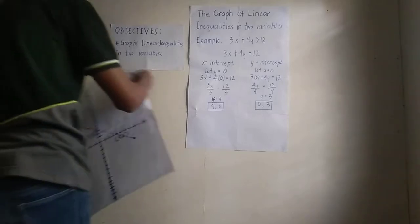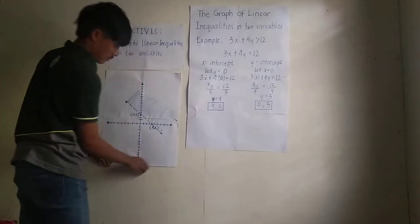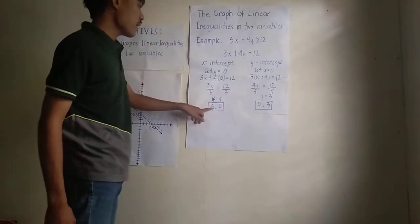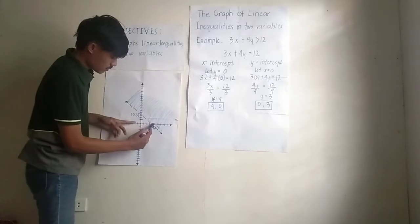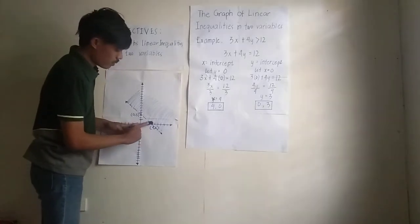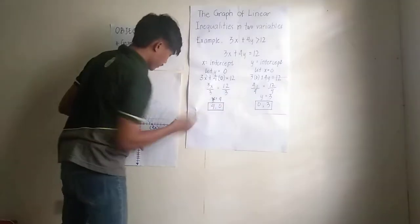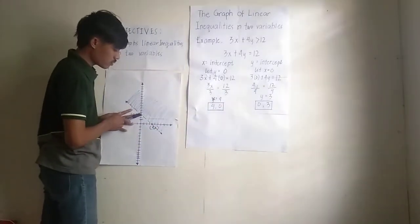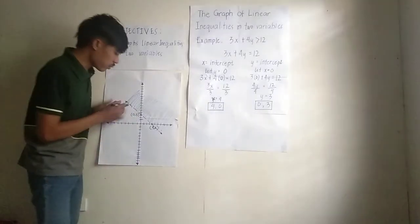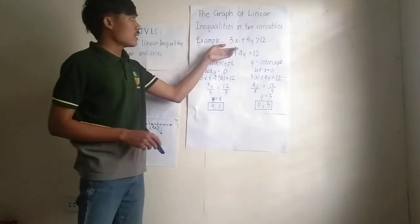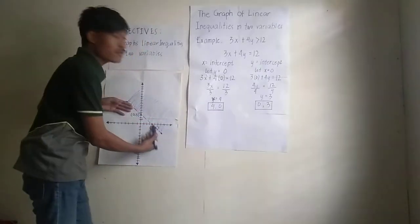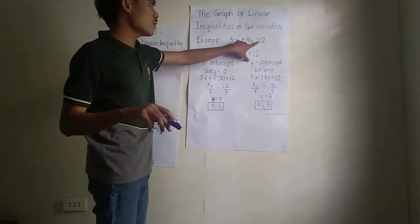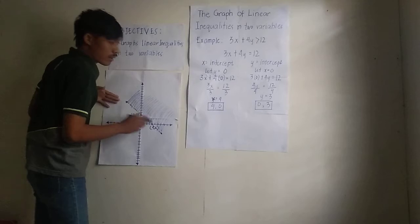Let us proceed to the graph. This is the graph. Since our x-intercept is (4, 0), we plot 1, 2, 3, 4 on the x-axis at y = 0. And our y-intercept is (0, 3), so we go 1, 2, 3 on the y-axis at x = 0. Now, to know why it's a broken line: since our inequality is 'greater than 12' — not 'greater than or equal to' — the line is a broken (dashed) line. Gets?